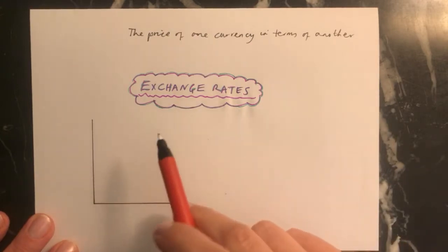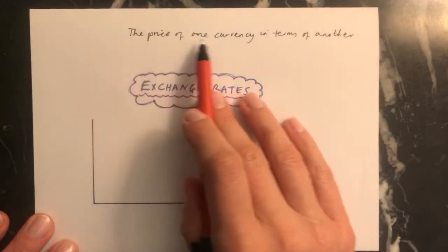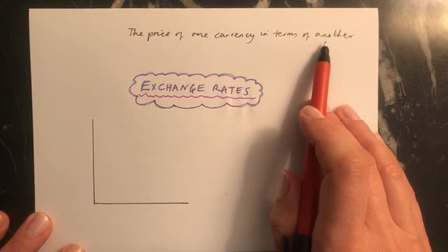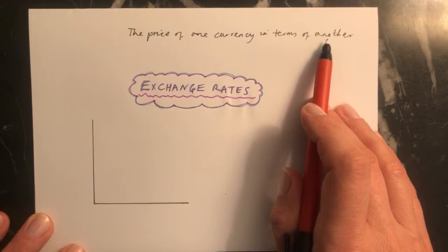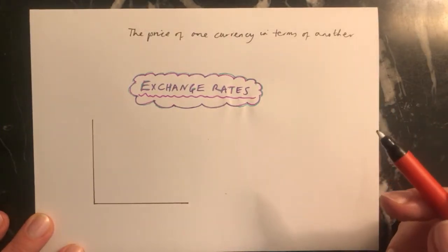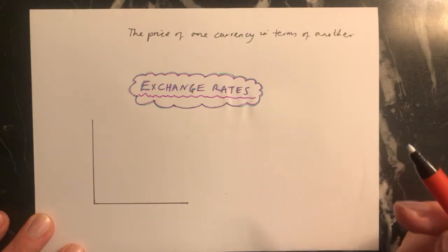So the first thing to know is the definition, and an exchange rate is the price of one currency in terms of another. You're always talking about the value of one currency against another currency. The only way of measuring the value of one currency is in terms of another currency, because that would allow you to buy the other currency.